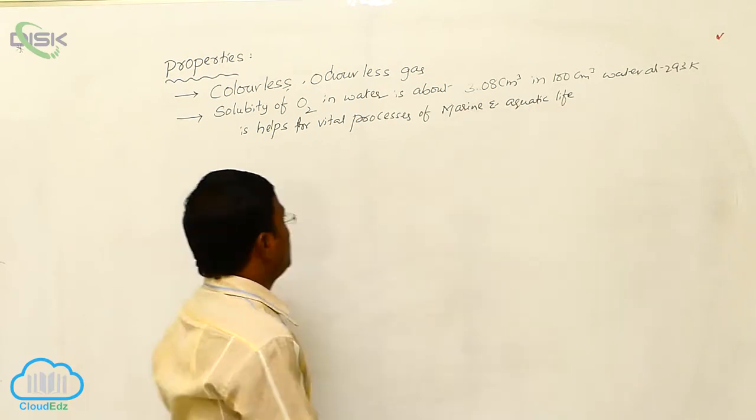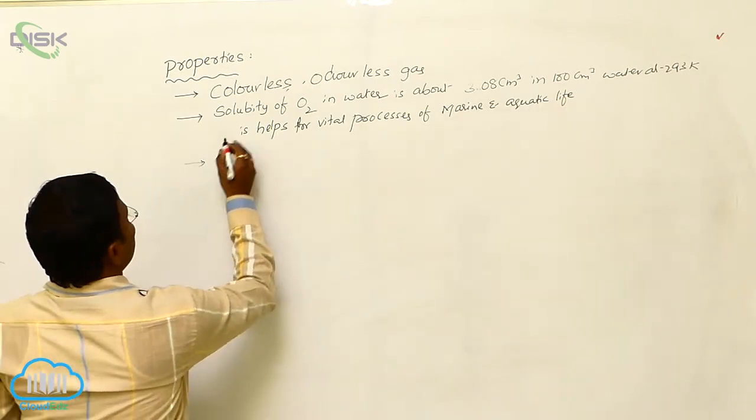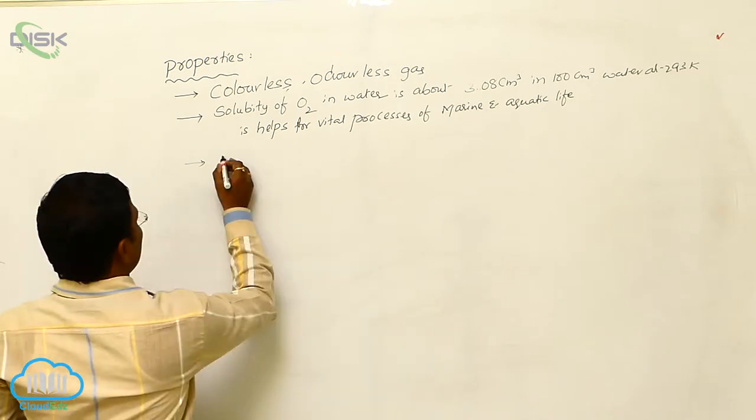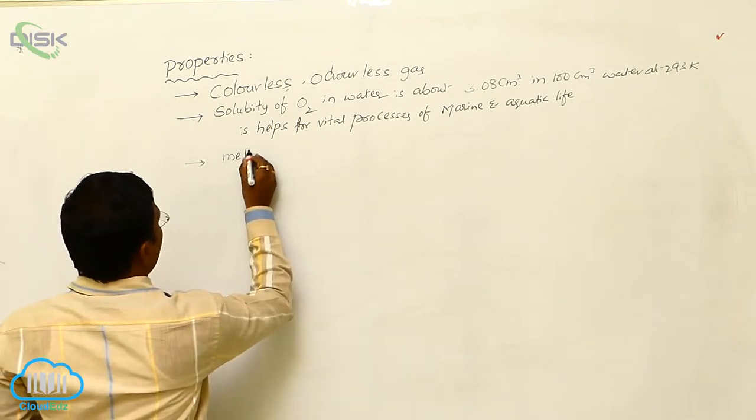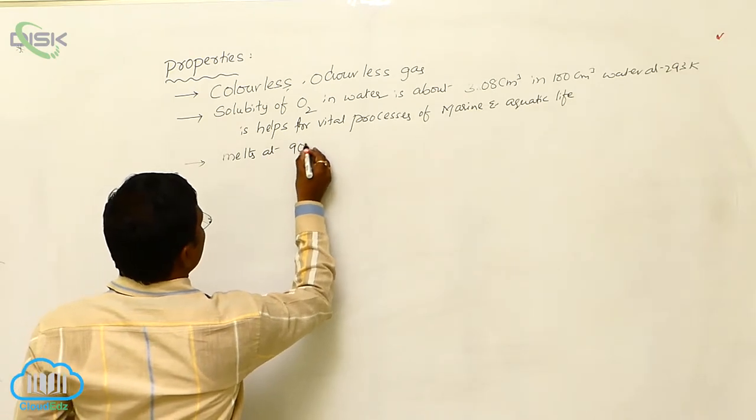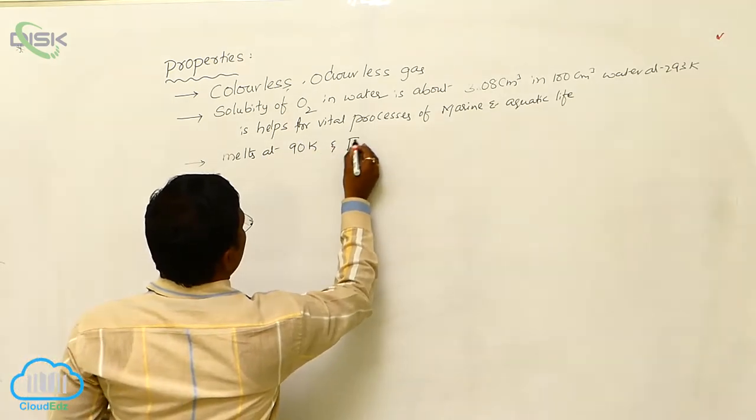Next, generally oxygen melts at, dioxygen melts nearly at 90 degree Kelvin and freezes at 55 degree Kelvin.